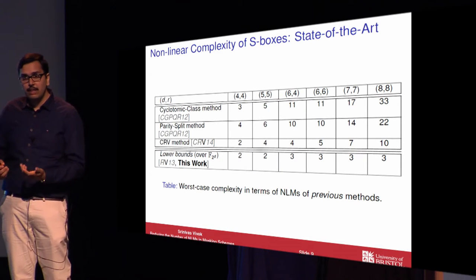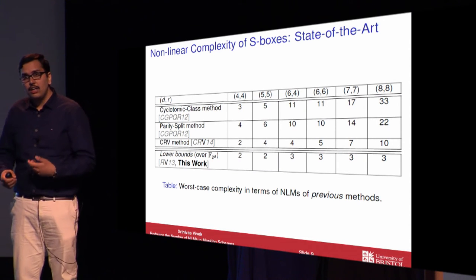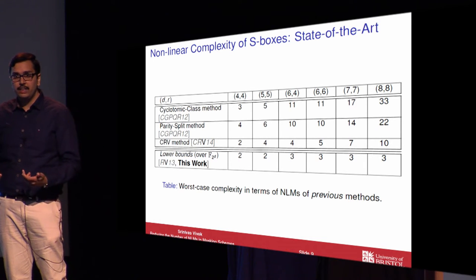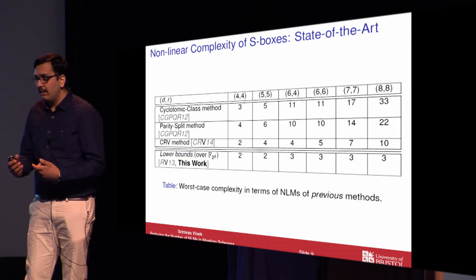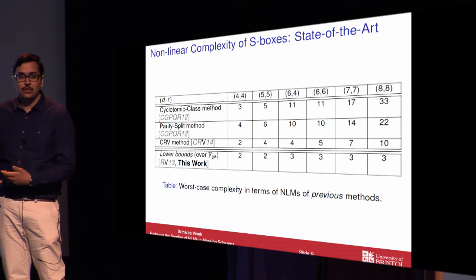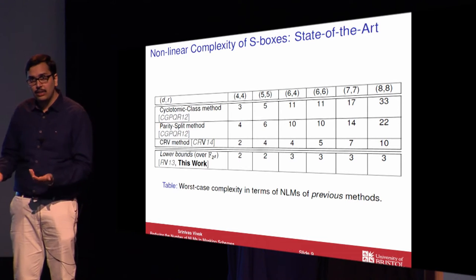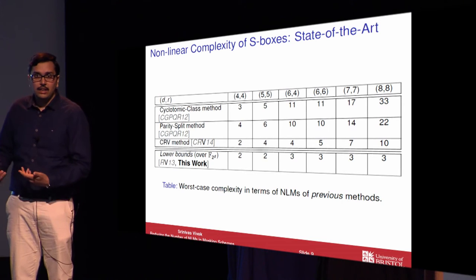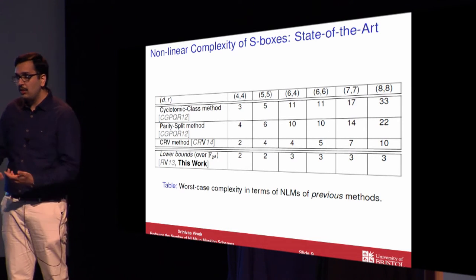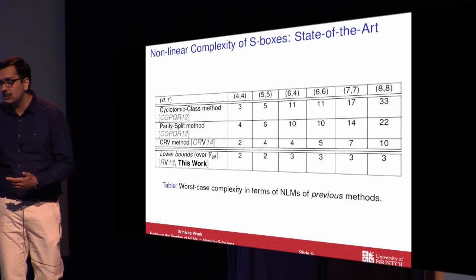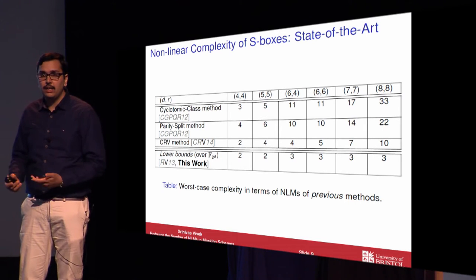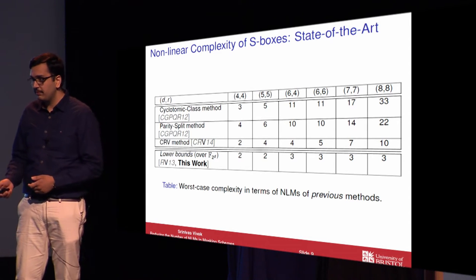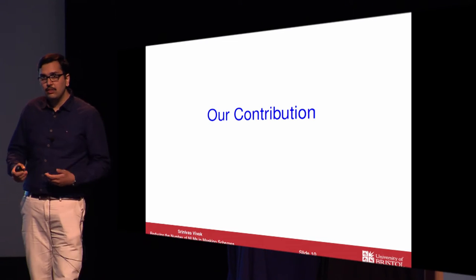In practice, the CRV method performs quite well. To evaluate any 4-to-4-bit S-box, one needs only two non-linear multiplications, and it's shown to be optimal. To evaluate any 6-to-4-bit S-box, particularly all the DES S-boxes, it needs four non-linear multiplications, and three is a known lower bound. To evaluate any 8-to-8-bit S-box, it needs 10 non-linear multiplications, and three is a known lower bound. So that's the state of the art.